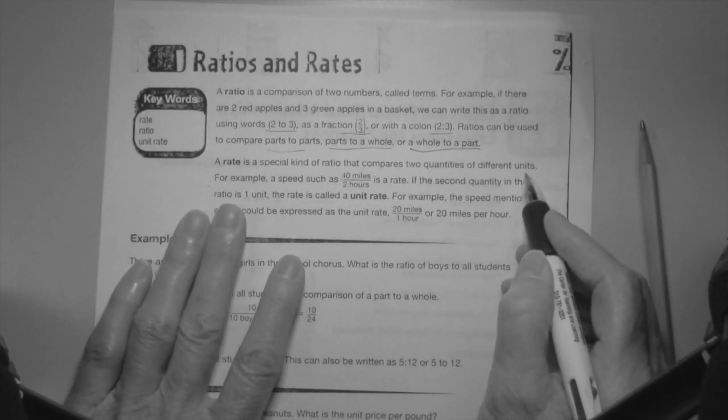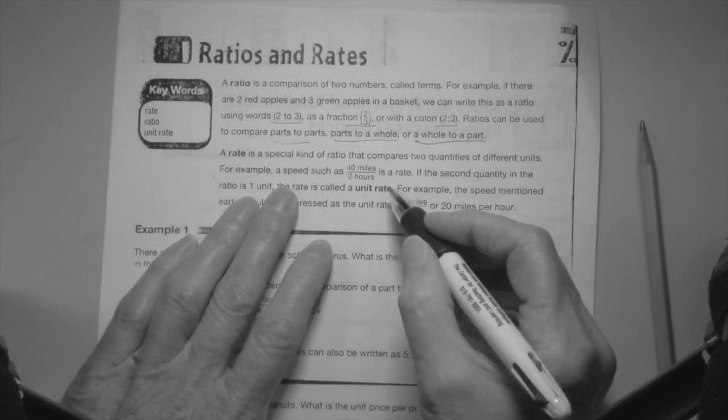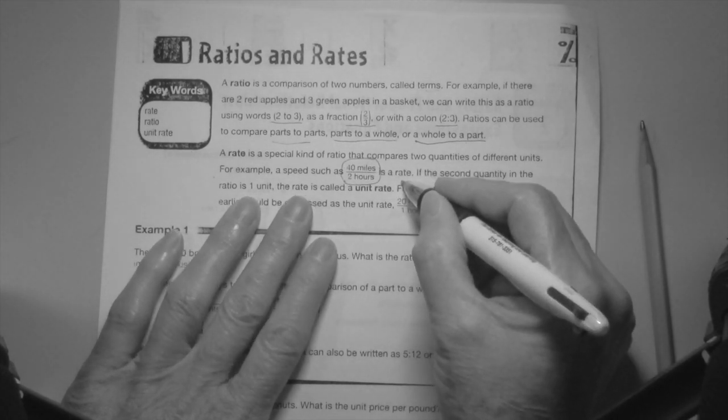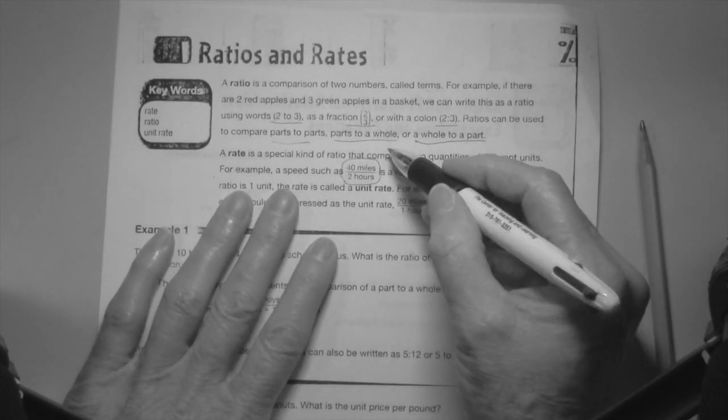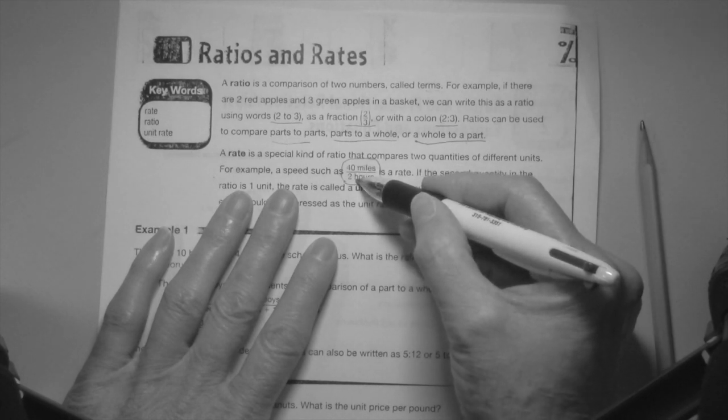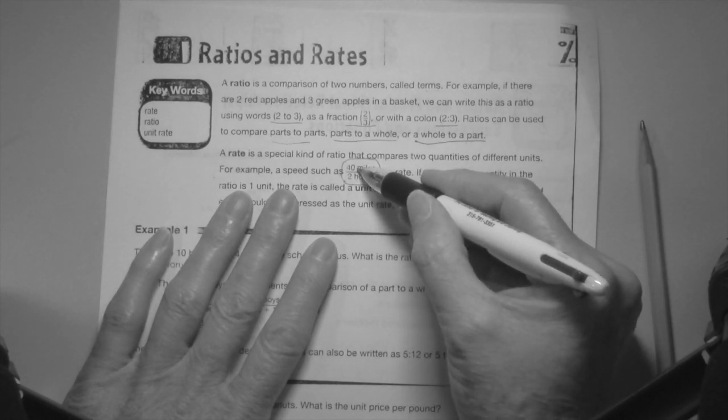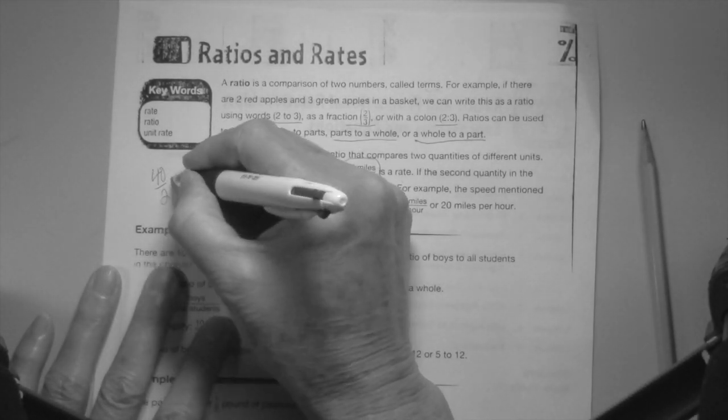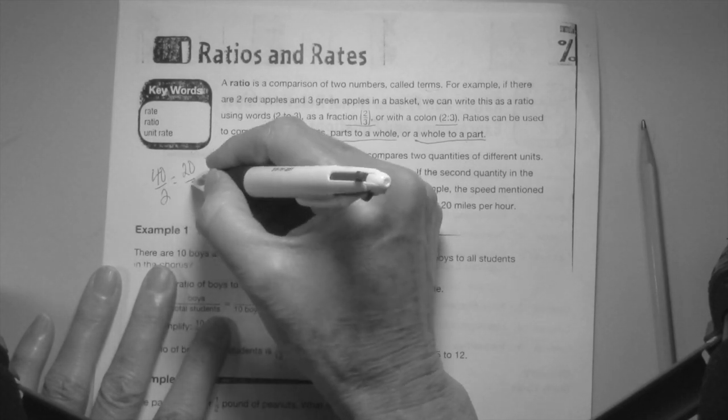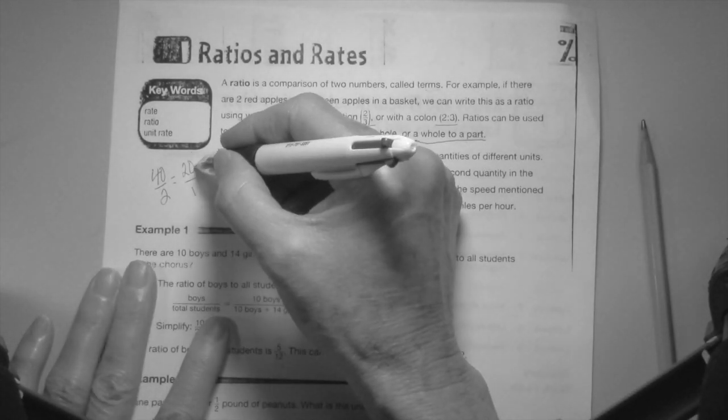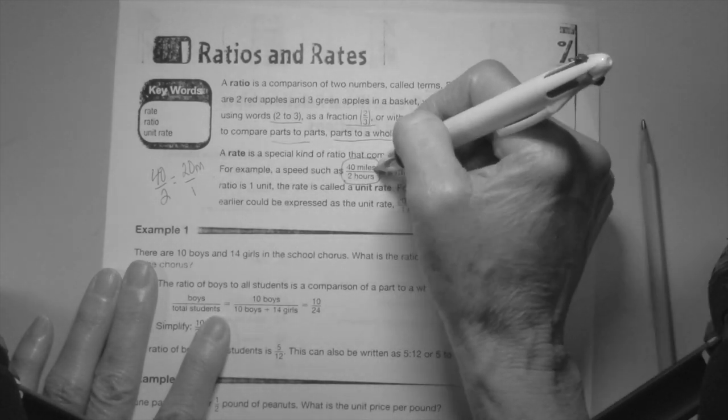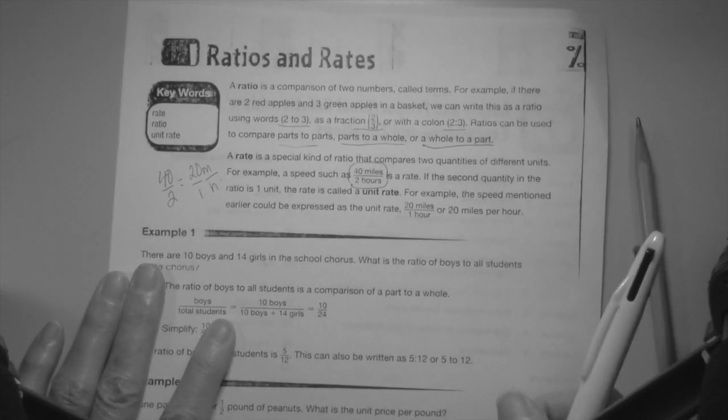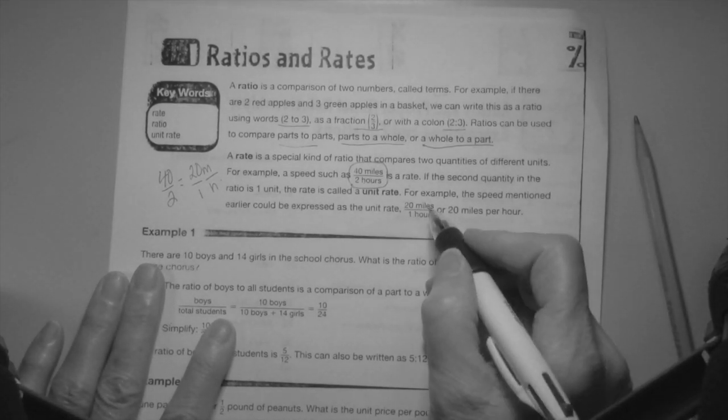A rate is a special kind of ratio that compares two quantities of different units. For example, speed such as 40 miles in two hours is a rate. It is not the unit rate. The unit rate would be how much is it per one, and if you divide it here it would come out to be 40 over 2, which is 20 over 1.